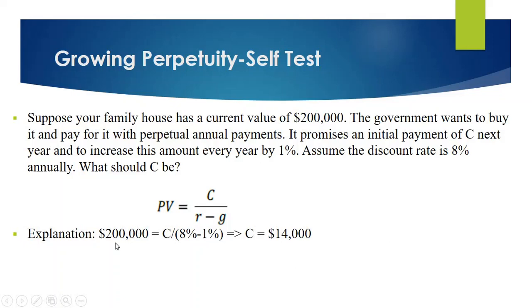PV is equal to $200,000 and we need to find out C. R is equal to 8%, which is the discount rate, and 1% is the growth rate. So, if we do the cross multiplication, your cash flow will be $14,000.